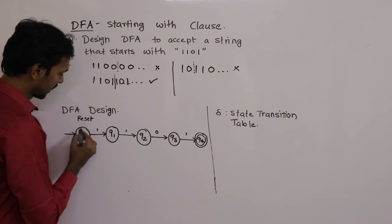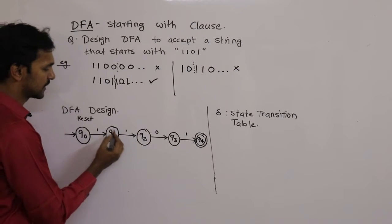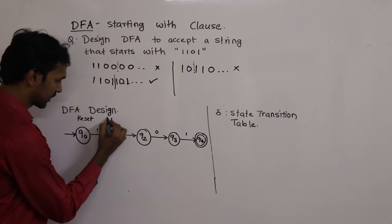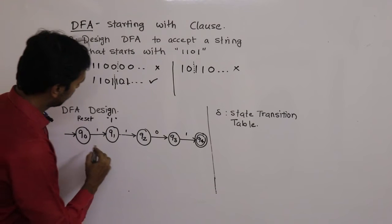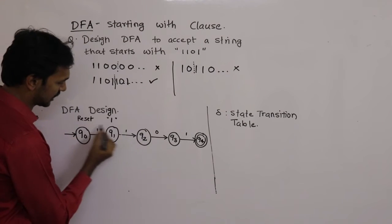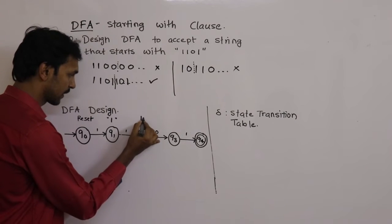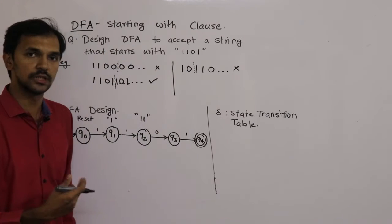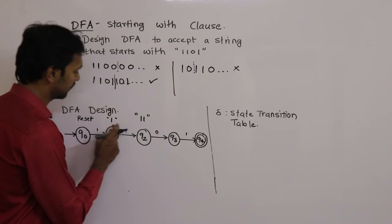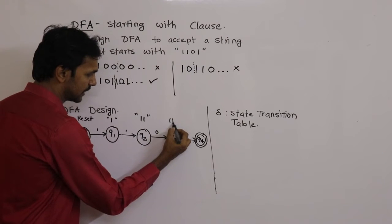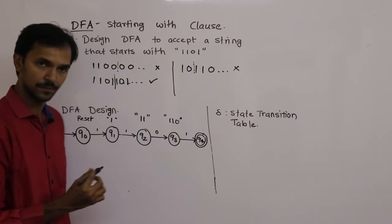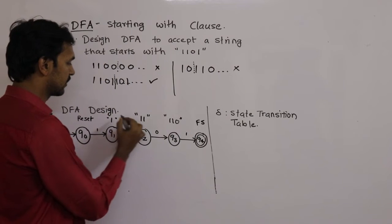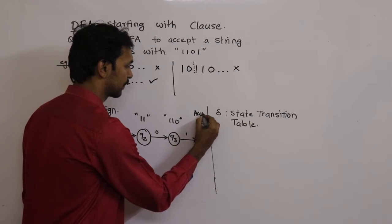Let's establish the meaning of every state. Q1 means the machine has processed 1 bit correctly. Q2 means it has processed 1, 1 — that is, 2 bits correctly. Q3 means it has processed 1, 1, 0 — that is, 3 bits correctly. Q4 is the final state, meaning the machine has processed 1, 1, 0, 1 — so accept the string.